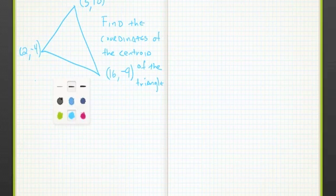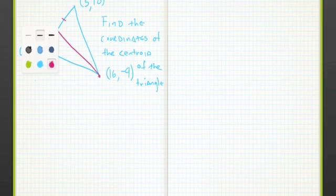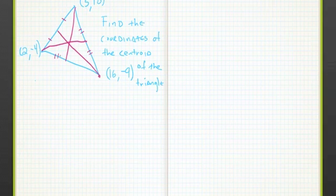So we have a triangle here, and we're going to have the three different points. Remember, the centroid is constructed by using the medians, so you go from the vertex to the midpoint on the opposite side, and where those three lines meet is called the centroid.